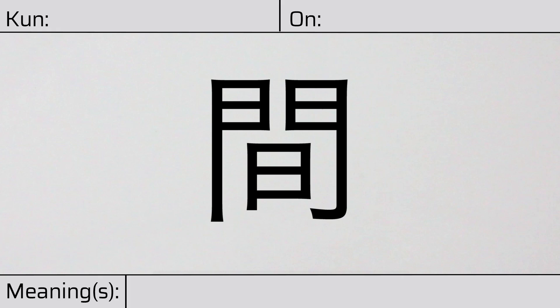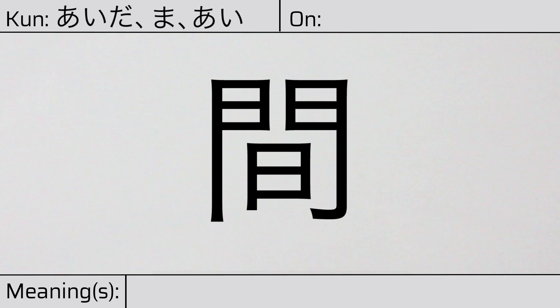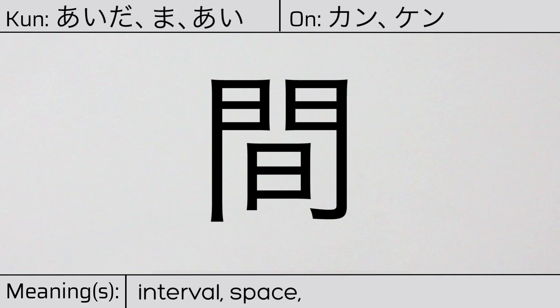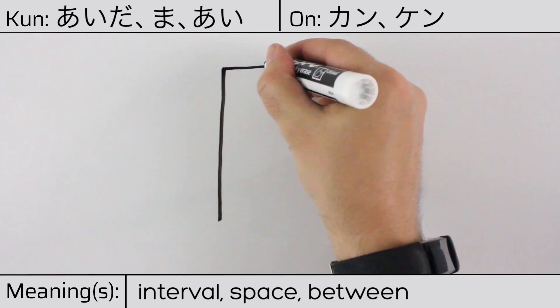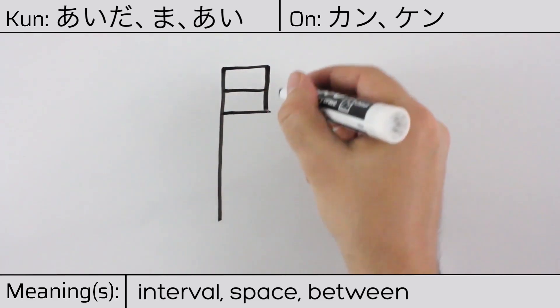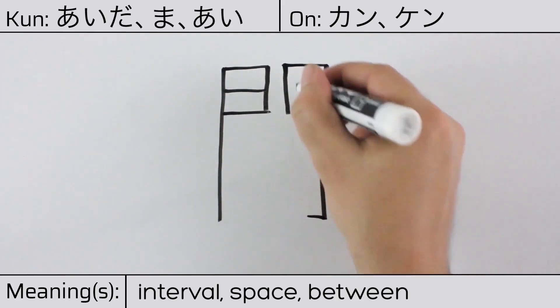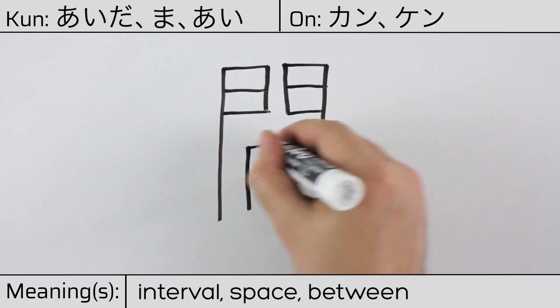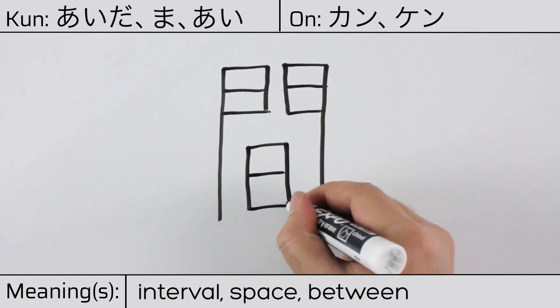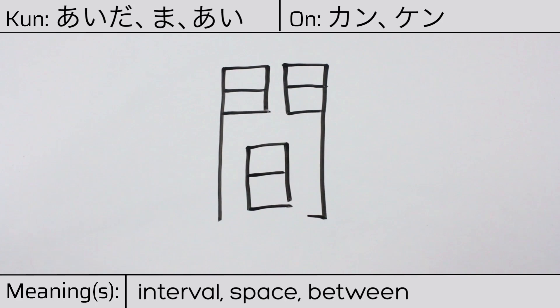Welcome to this lesson on Japanese kanji. Today, we'll be discussing this character. This kanji has kunyomi or Japanese readings of aida, ma, or ai, and it has onyomi or Chinese readings of kan or ken. This character has the meanings interval, space, or between. Here is the stroke order.